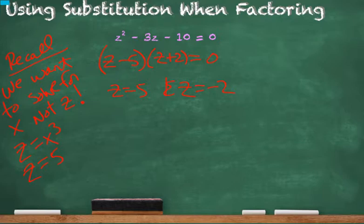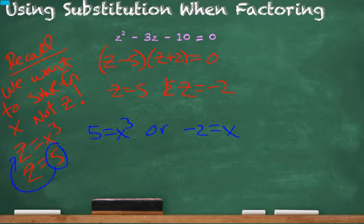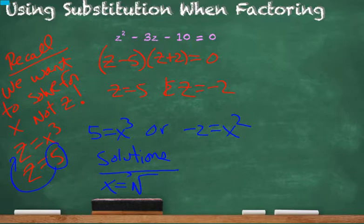We can take this 5 and plug it back into here and say that 5 is equal to x cubed, or negative 2 is equal to x cubed, and we get our solutions. x is equal to the cube root of 5, or x is equal to the cube root of negative 2.